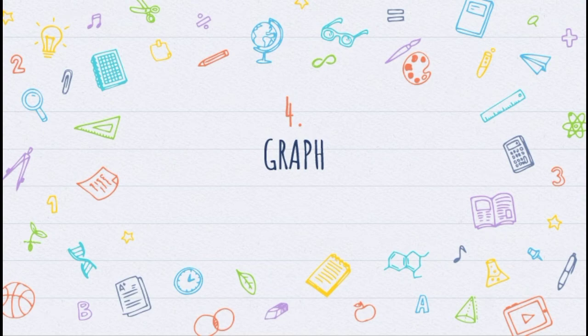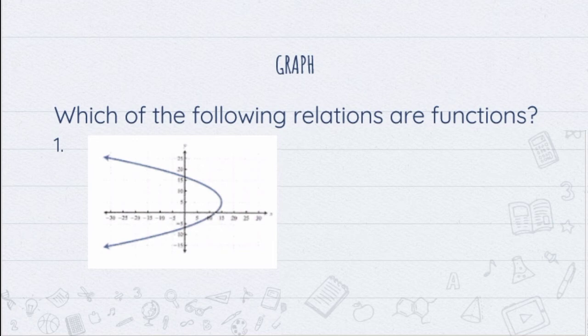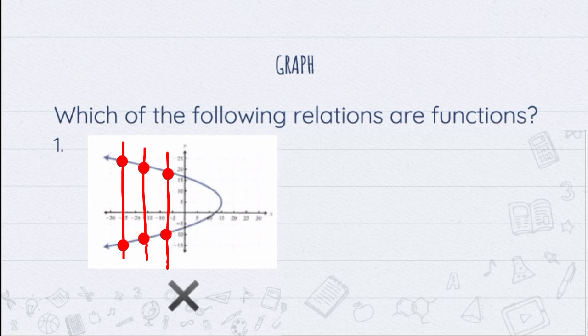Let us now proceed to number 4, graph. Before we start, let us first discuss the vertical line test, which will help us in identifying the graph of a function. It states that a graph represents a function if and only if each vertical line intersects the graph at most once. We have here the graph in number 1. Placing vertical lines, each vertical line intersects at two points of the graph. Therefore, this is not a function.